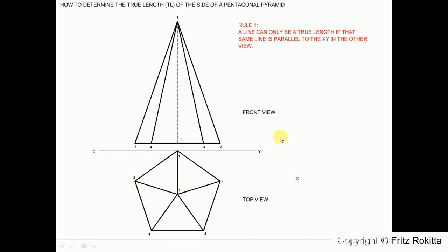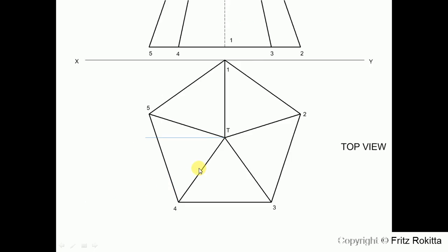Step 1. From the tip of my top view, draw a parallel construction line with the XY out to the left. Here it's clear to see that I drew a construction line from the tip parallel to the XY line out to the left.